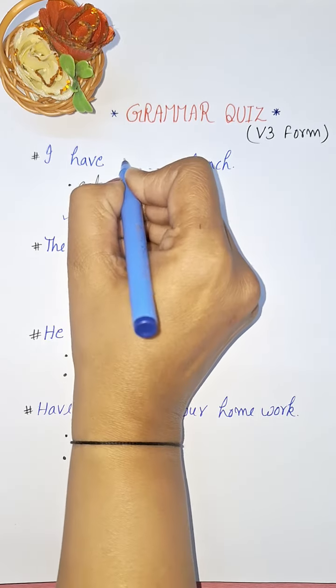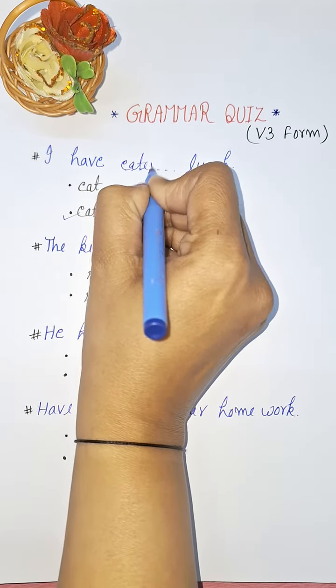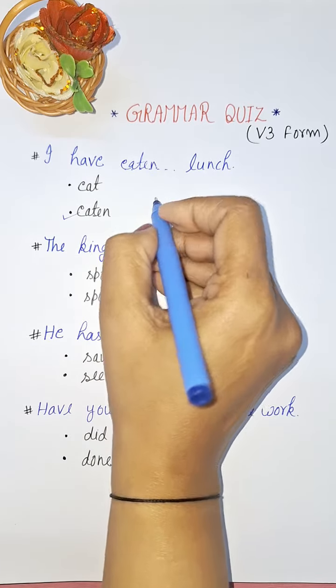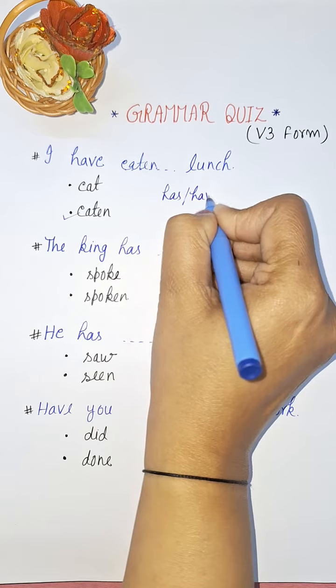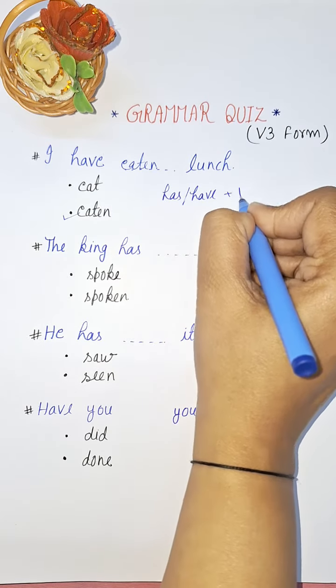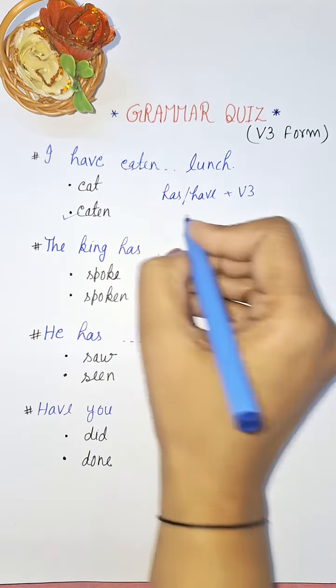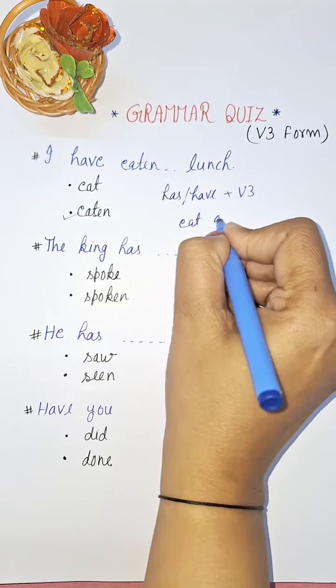Why? Because with has and have we always use V3 form of the verb, like eat, ate, eaten - V1, V2, and V3 form.